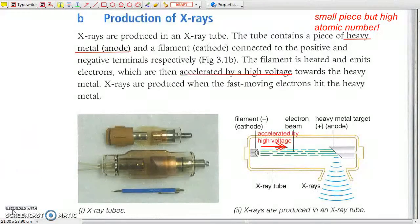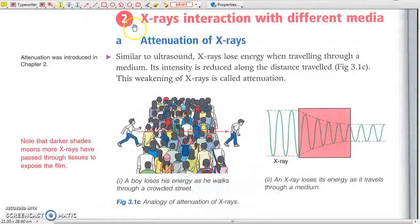The kinetic energy of the electrons is converted into electromagnetic radiation as the electrons are decelerated by the high atomic number metal target. 2. X-rays Interaction with Different Media.